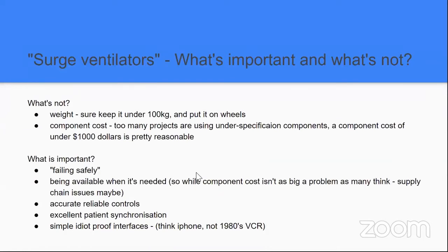What's important in a surge ventilator? A couple of things we can discard immediately. Weight is not really a problem — we don't need lightweight ventilators. We've already got self-inflating bags for short-term transport. We don't really need portable ventilators — if it's heavy and has a car battery, we'll put wheels on it. Hospitals have good floors and are used to heavy equipment. Most ICU ventilators come in over 50 kilograms. So weight is not a big problem.